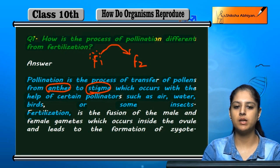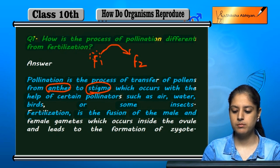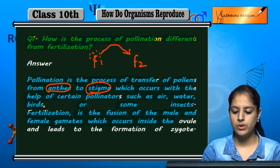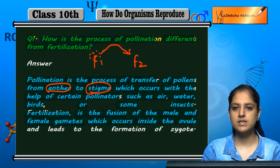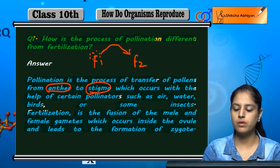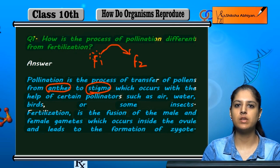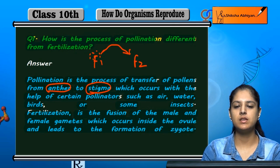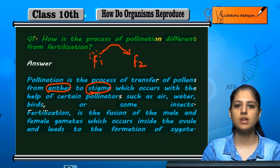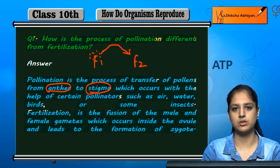But if we talk about fertilization, it involves the fusion of male and female gametes, which occurs inside the ovule and leads to the formation of a zygote. After that, it leads to reproduction.